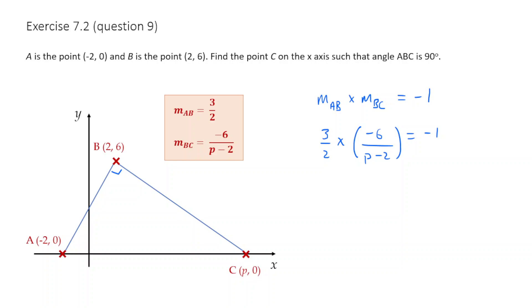So we can multiply these together. So we're going to get minus 18 here is going to equal to minus 18 over 2p minus 4 on the bottom is equal to negative 1. So if I multiply across, I'm going to get minus 18 is equal to minus 2p plus 4.